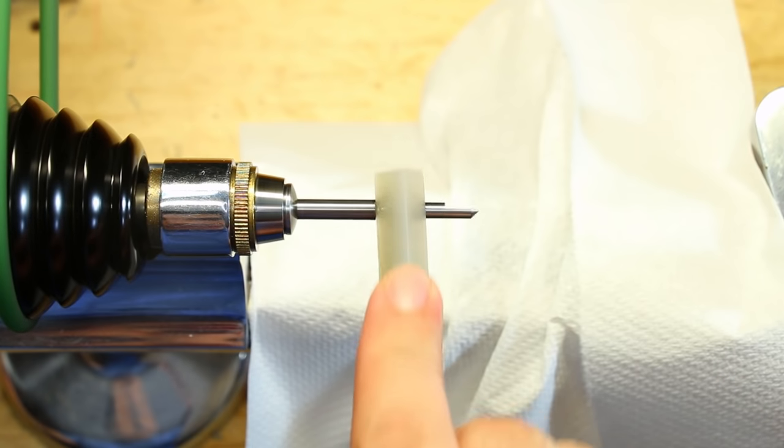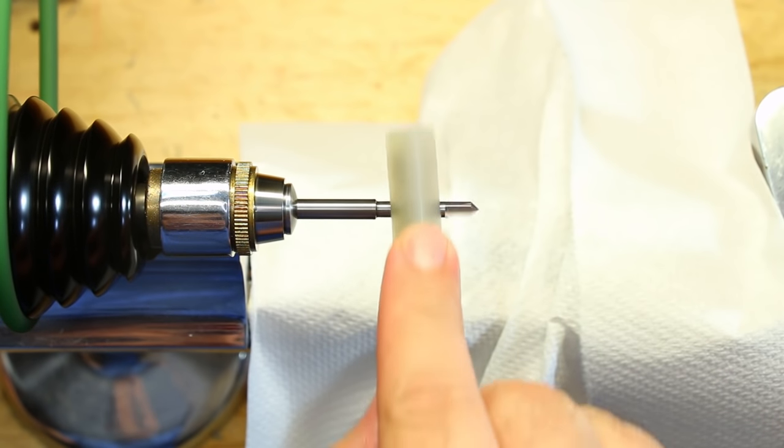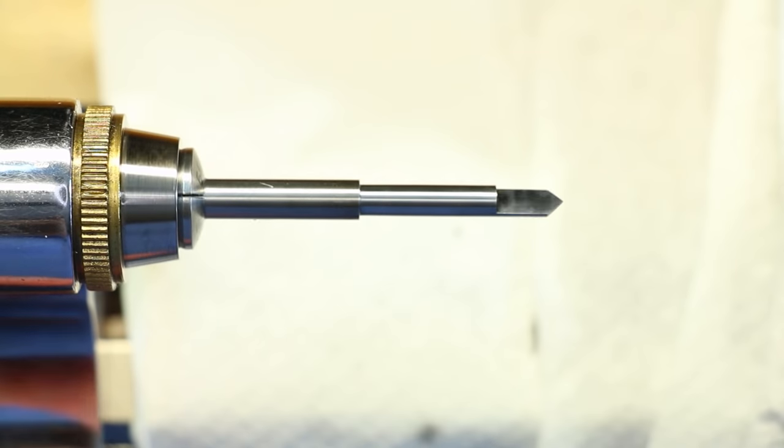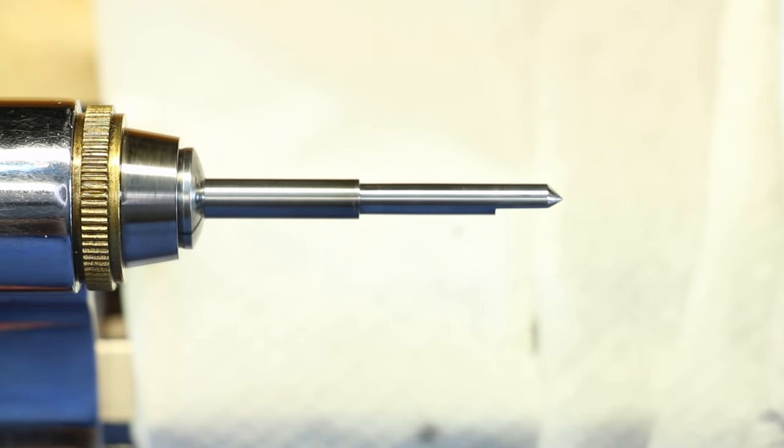If you're trying to polish the whole tool in the lathe, you run the high risk of changing the profile of the taper and rounding the sharp cutting edge.